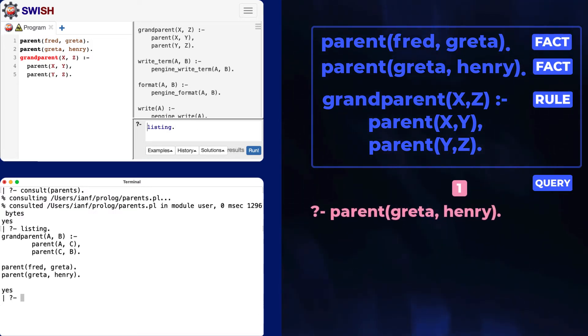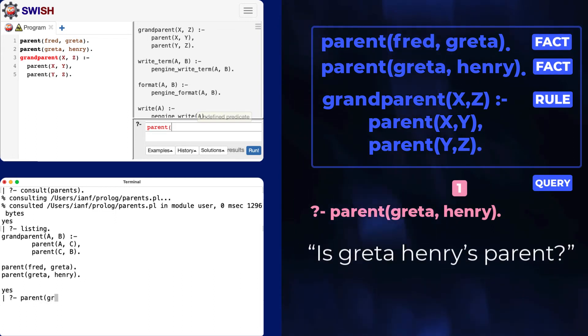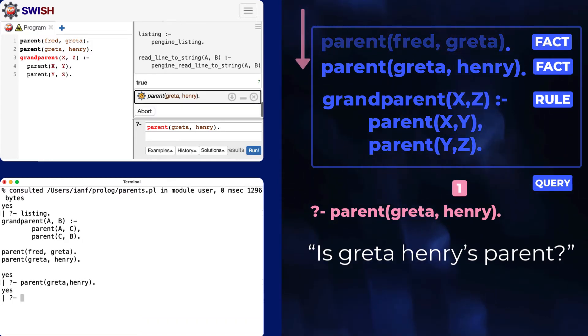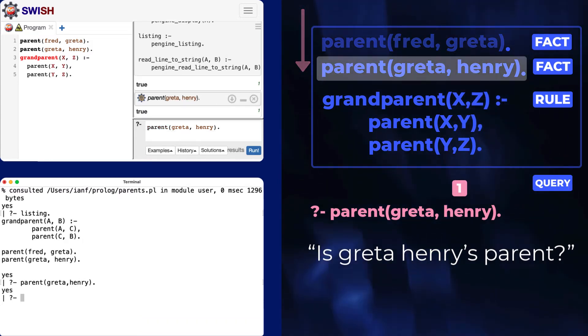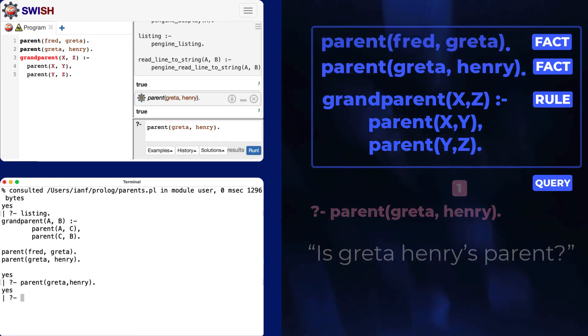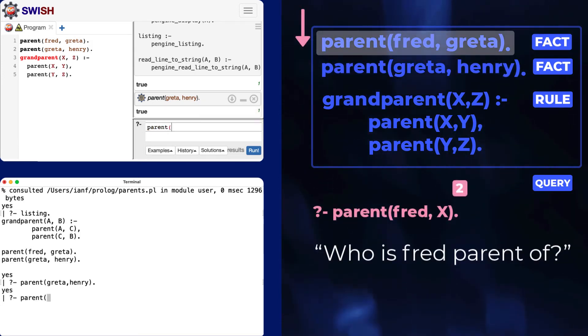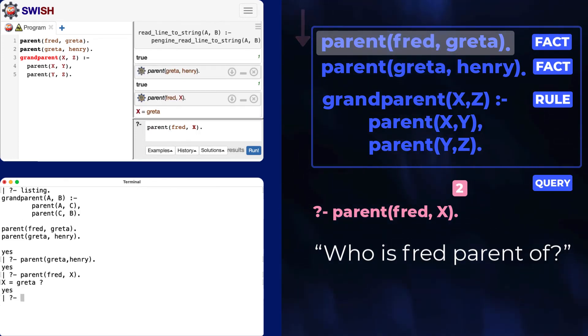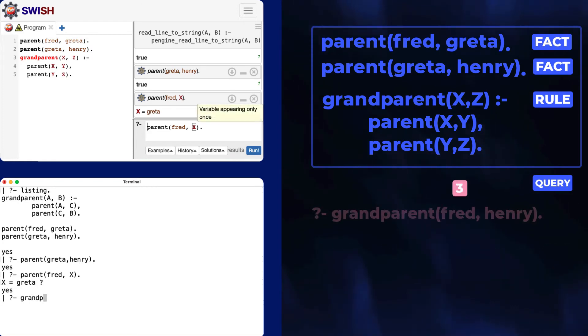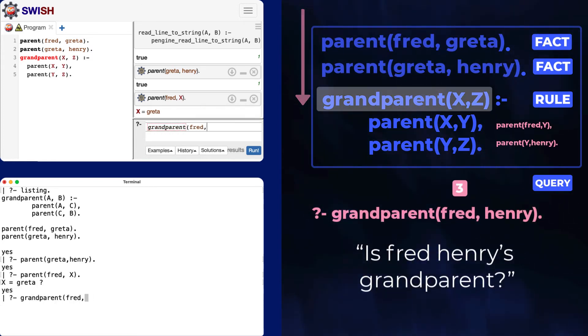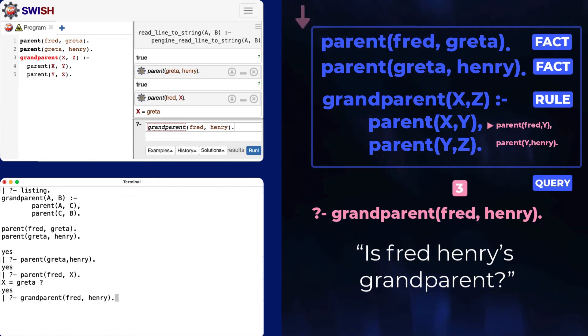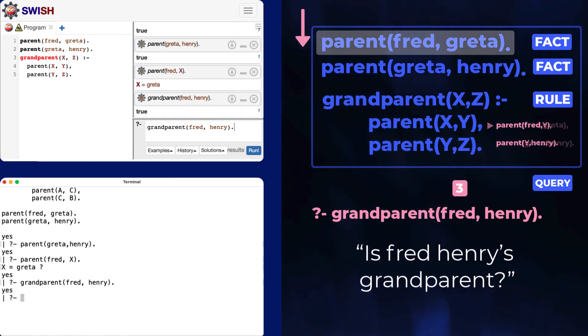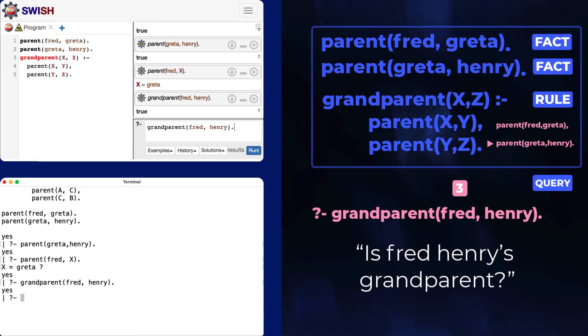Going in order, this first query is about parents, so prologue searches its memory for something that matches. It always works top-down. Here there is a match on the second line. Query two matches the first line if you set a variable. So prologue offers the variable binding as a solution. Query three matches the third line. Prologue then looks again from the top to find parent Fred Y, and again from the top to find parent Greta Henry.